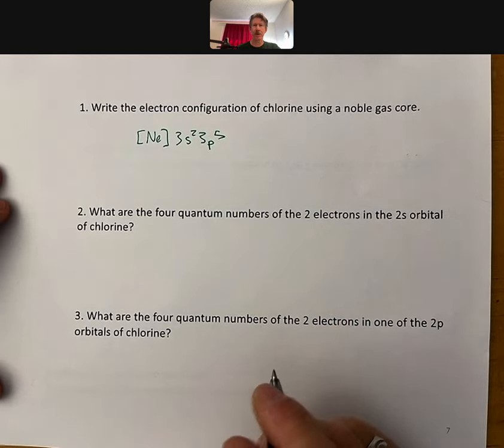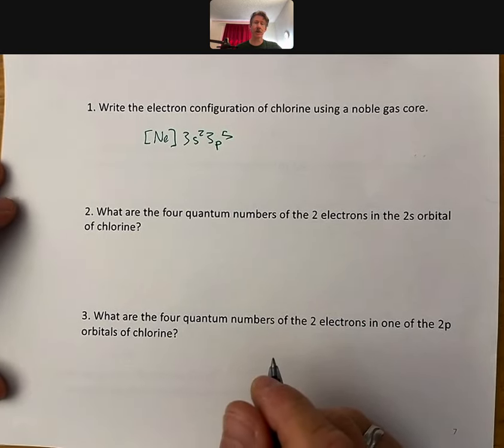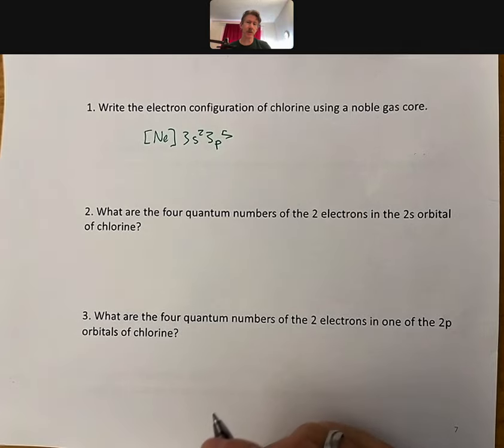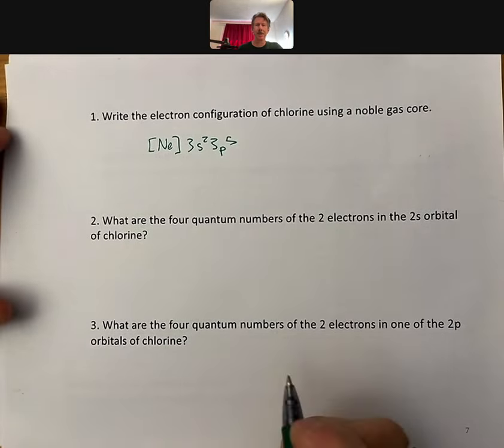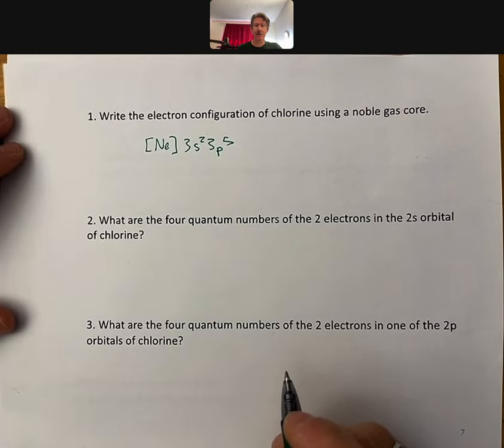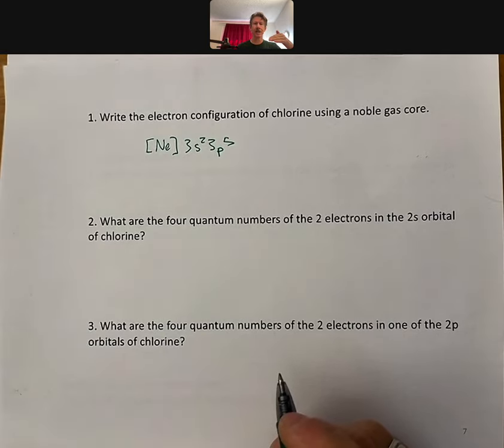Quantum numbers are the solutions to the Schrodinger equation. We don't solve the Schrodinger equation, not in this course anyway, but we should know that quantum numbers are solutions to the Schrodinger equation because the solutions describe the positions and the orbitals and the electrons in those orbitals.